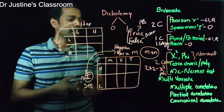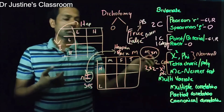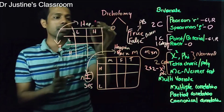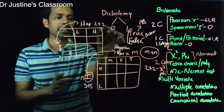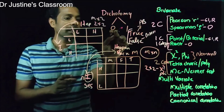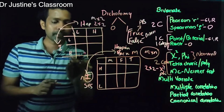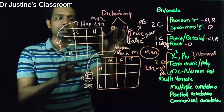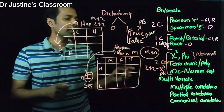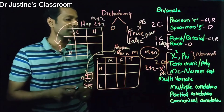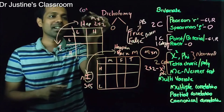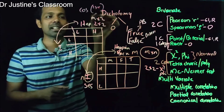Polychoric correlation uses the same assumptions as tetrachoric correlation. Whereas tetrachoric is for a two-by-two condition, polychoric is used when you have m-by-n — meaning multiple categories for each variable. Tetrachoric and polychoric correlations use cosine values to calculate the correlation.